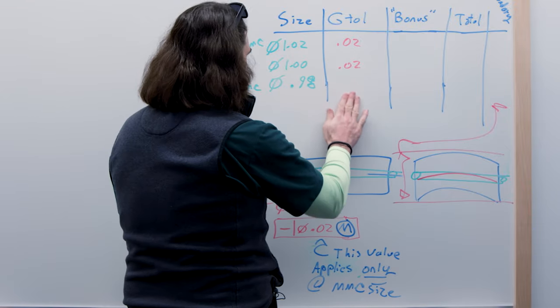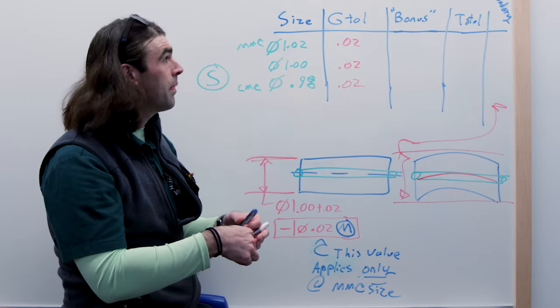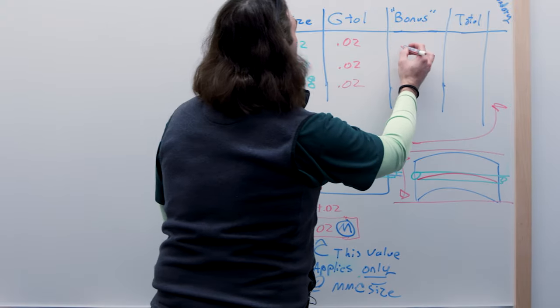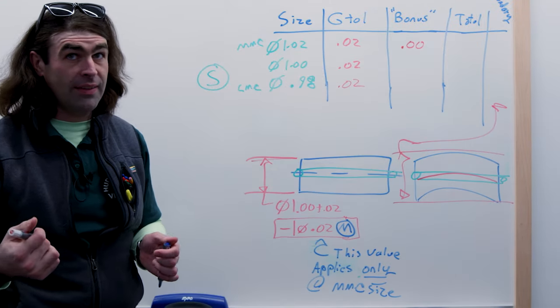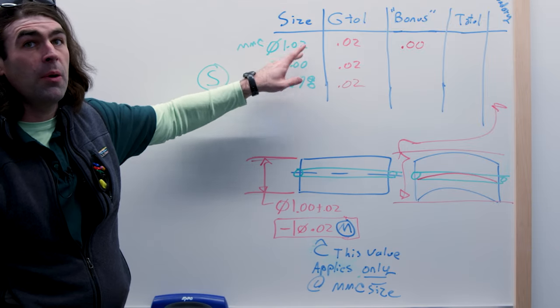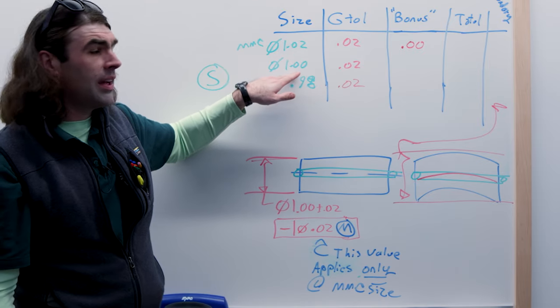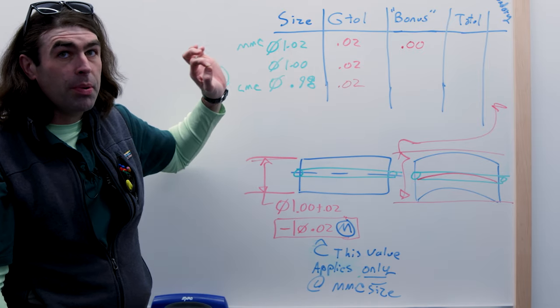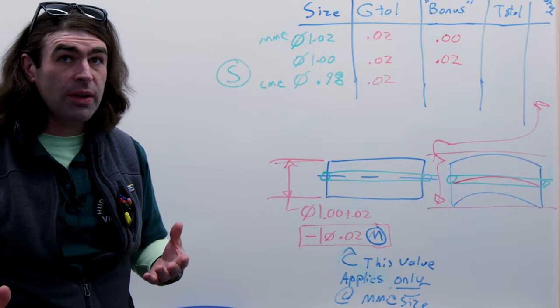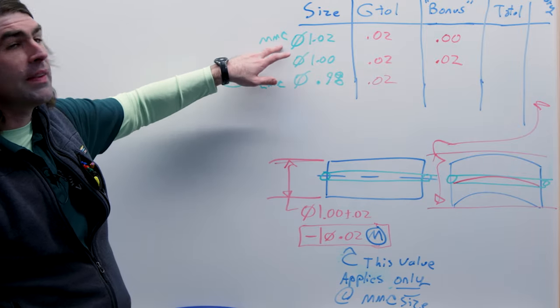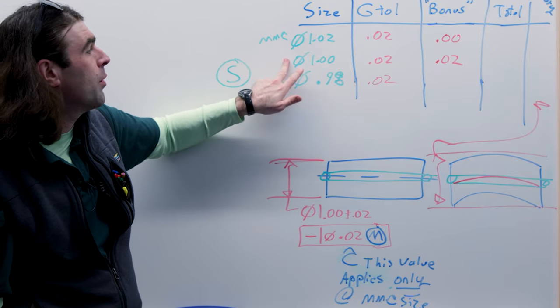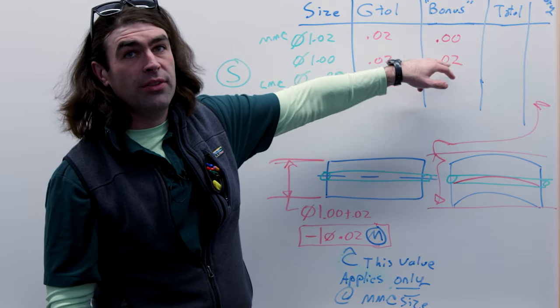The geometric tolerance that we start with doesn't change. We have this concept of bonus tolerance or additional tolerance. We get zero bonus tolerance because we know that there's 20 thousandths applies at the MMC size. But if we come in at some size other than the MMC size, then we get bonus tolerance equal to the difference. So the difference, the amount of bonus tolerance, is equal to the difference between the MMC size and the actual size. So in this case, 1.02 minus 1.00 is going to give us 0.02.